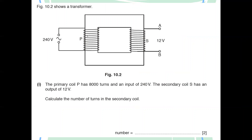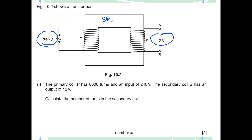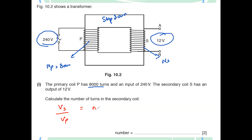Another question: figure 10.2 shows a transformer converting 240 volts to 12 volts, making it a step down transformer. The primary has 8,000 turns. We want the number of turns of the secondary. Using the same formula — VS over VP equals NS over NP — the turn ratio and voltage ratio are always constant.